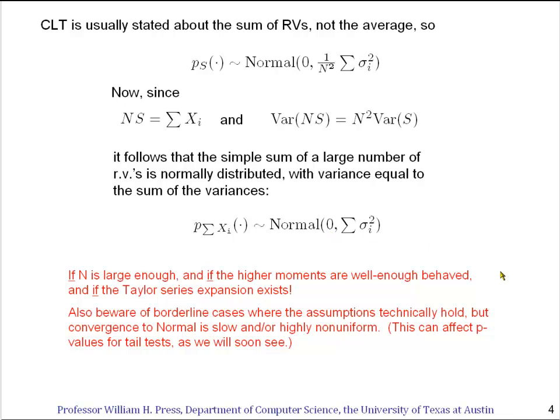Let's restate the technical conditions. n has to be large enough. In other words, the sum of two arbitrary random variables is not normal, although it will start to look like normal in many cases. The higher moments have to be well behaved, and the Taylor series expansion has to exist.